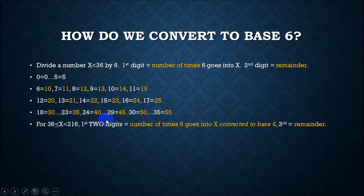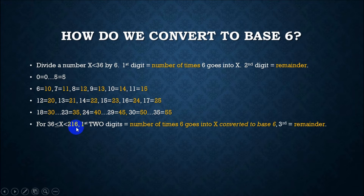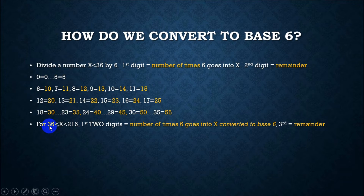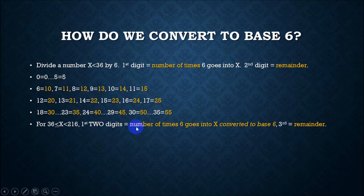When you get to 36, it's going to look like 1,0,0 — you're going to get a 3-digit number for anything 36 all the way up to 215. When you get to 216, you're going to get a 4-digit number, because that's 6 cubed — 6 to the 3rd power — which is 216 itself. In our calculations, we're only going to be worrying about 2-digit outcomes, but theoretically, if you're adding up a bunch of times — say calculating lengths of songs in a playlist — you could exceed 36. So for x from 36 up to 215, you'll have a 3-digit outcome. The first two digits are the number of times 6 goes in, converted to base 6, and I'll show you exactly what that means.